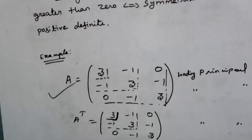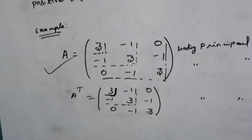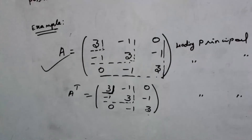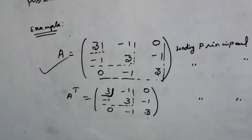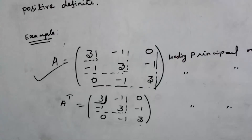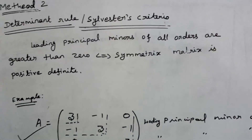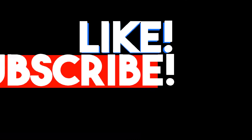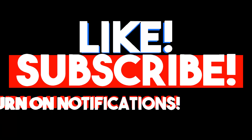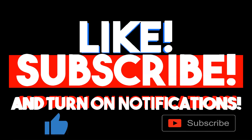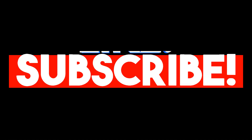We have now discussed the first two methods for identifying positive definite matrices. Methods 3 and 4 will be discussed in a follow-up. Thank you.